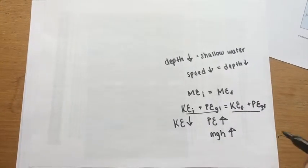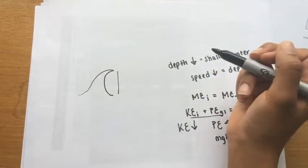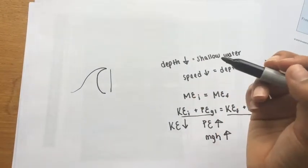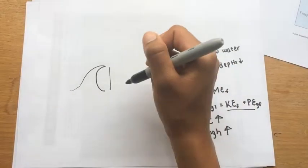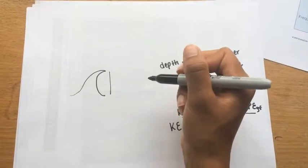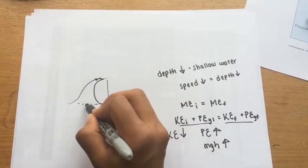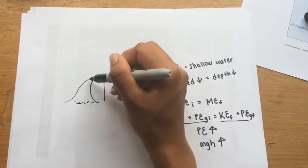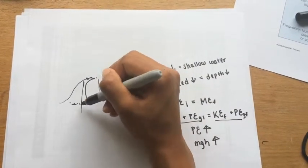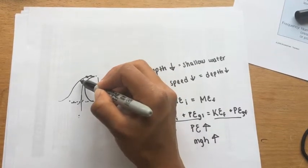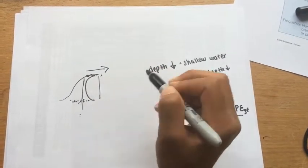As a side note, that also explains why a wave forms this steep front as it approaches shore. Waves travel faster in deeper water because there's less friction with the ocean floor, so the particles of water higher up are traveling faster than the particles lower down. This forms the steep front as a wave approaches the shore.